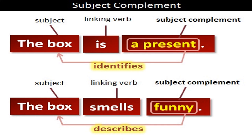Let us deal with the subject complement separately. 'The box is a present' — 'the box' is the subject, 'is' is the linking verb, and 'a present' is describing or identifying with the subject. Hence 'a present' is a subject complement. Another example: 'The box smells funny' — 'the box' is the subject, 'smells' is the linking verb, and 'funny' is describing the box. Hence 'funny' is a subject complement, describing the subject.